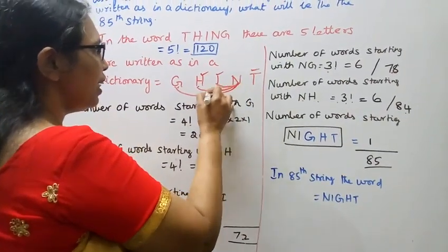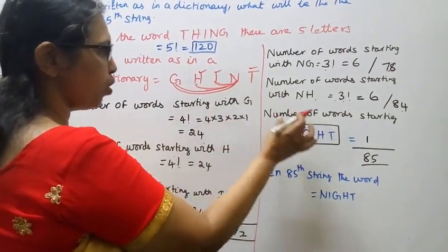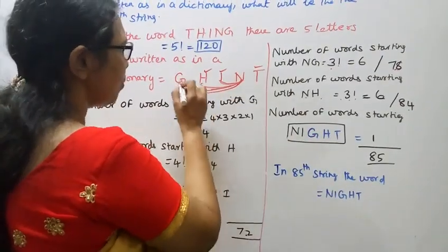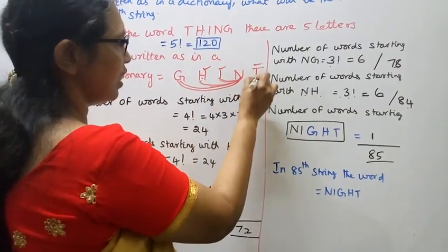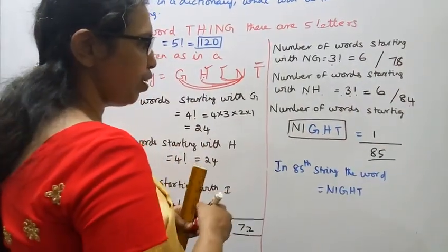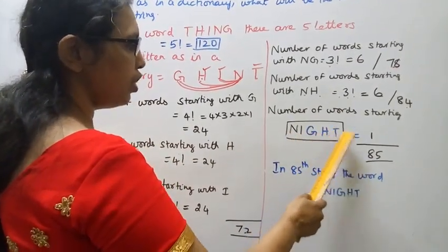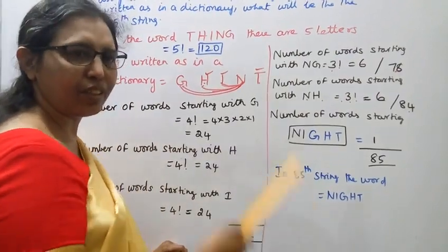After NH, in alphabetical order, the next letter is I, then G, then T. So the 85th string, the word is NIGHT. N-I-G-H-T. Okay.